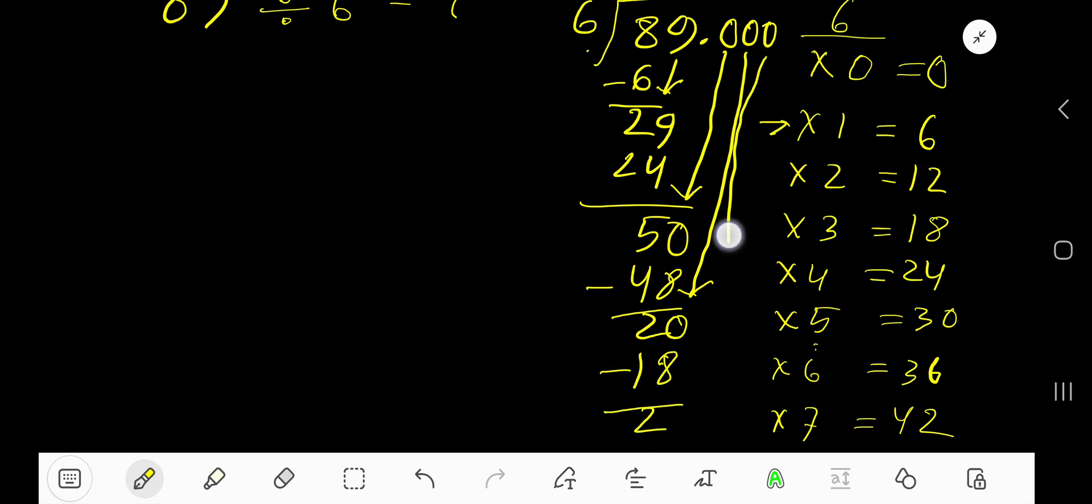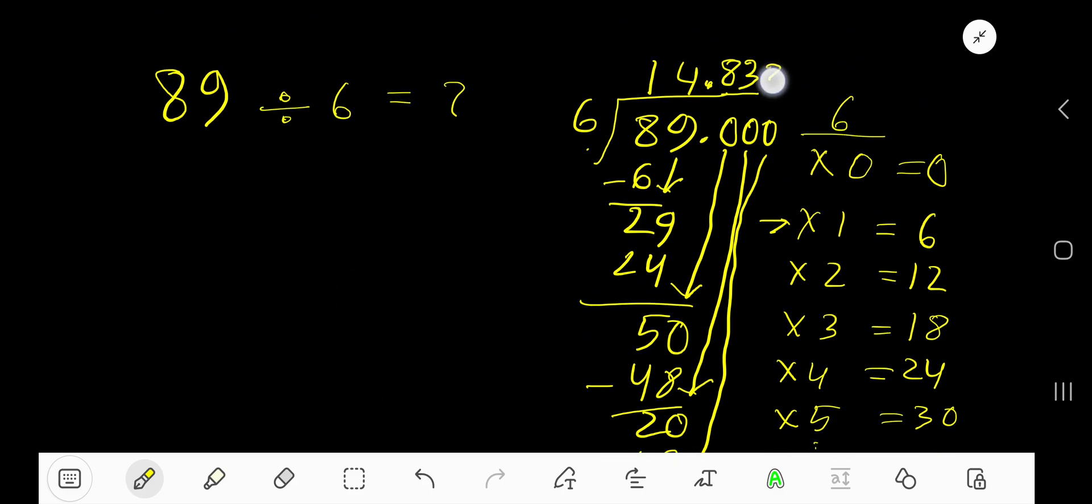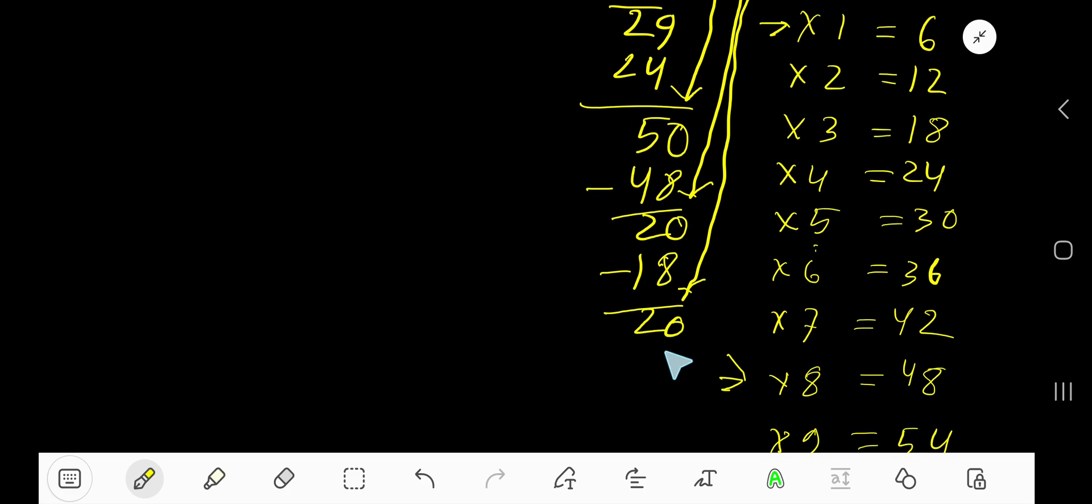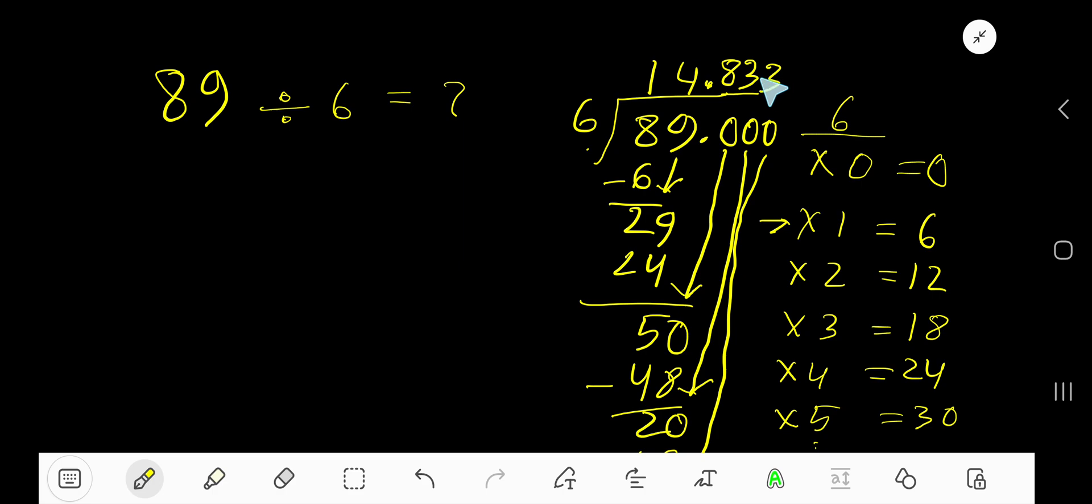Subtract to get 2. Bring down the next digit. 3 times 6 is 18, subtract 2. You can place here 3 dots, or you can place here a bar over 3 because this 3 is repeating. So 14.83̄ is your answer.